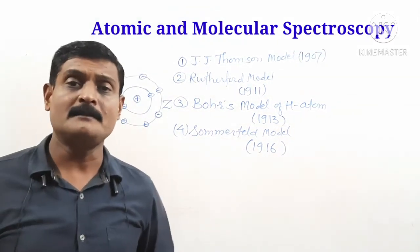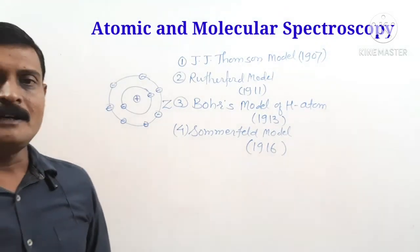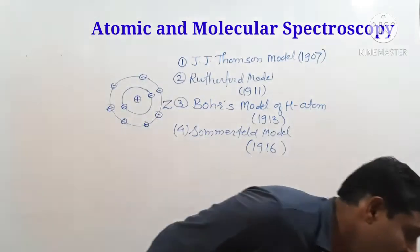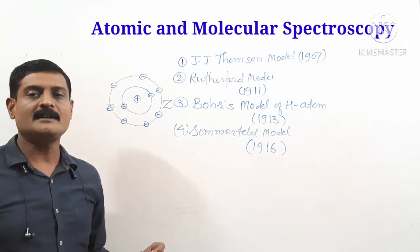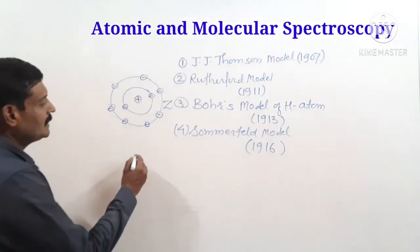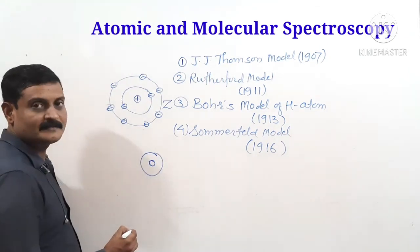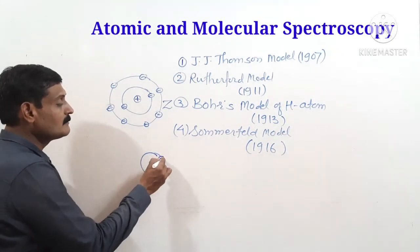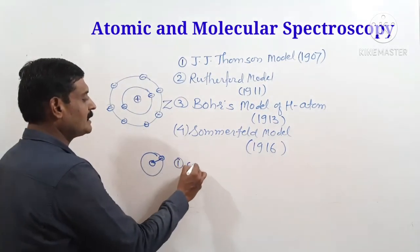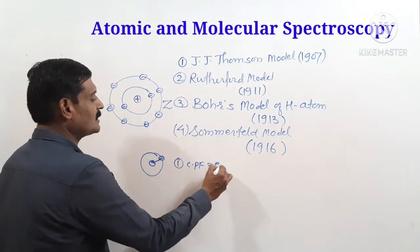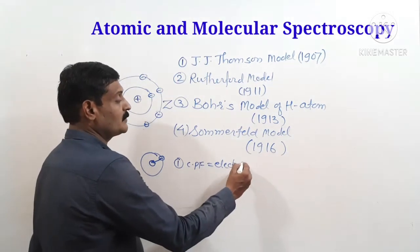Bohr's theory of hydrogen atom is based on three postulates. The first postulate states that the electron revolves around the nucleus in a stable circular orbit because the centripetal force is provided by the electrostatic force — that is, the electrostatic force behaves as the centripetal force.